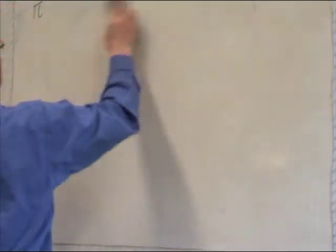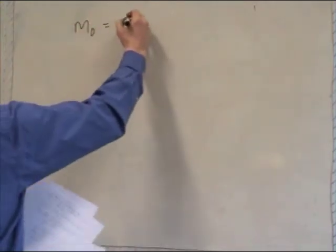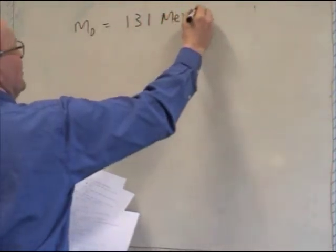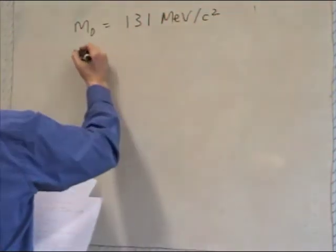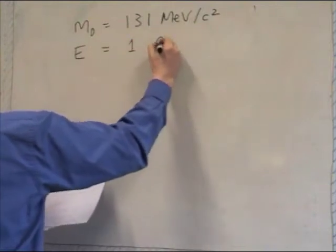Like I said, I'm not going to do much editing of this, because it will take too much time. So, M nought equals 131 MeV upon C squared, and E, the total energy, E equals 1 GeV.